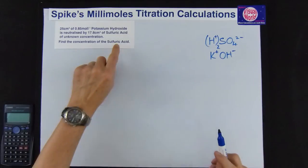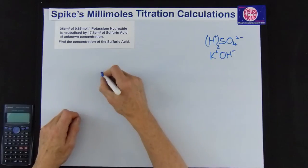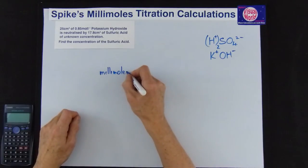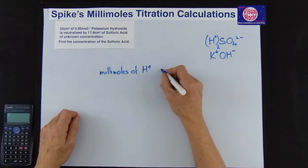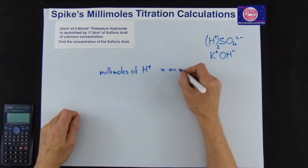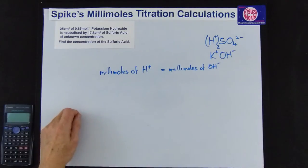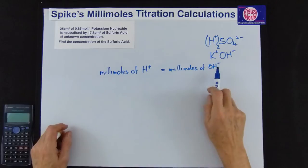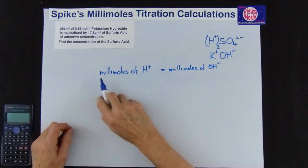We're looking for the concentration of the acid so we're going to deal with the acid first. So we write out millimoles of H+ has got to be equal to millimoles of OH-. To be neutral we've got to have the same amount of each to neutralize.